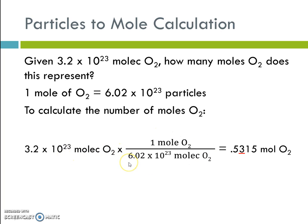Our conversion fact here, again, has what we want, moles of oxygen in the numerator. What we're getting rid of, molecules in the denominator. Let's cancel out our units. Molecules of oxygen divided by molecules of oxygen cancels out. It equals 1. When we plug it into our calculator, we're going to get this number right here, 0.5315 moles of oxygen.